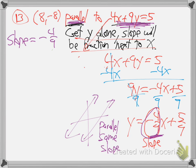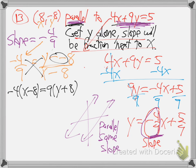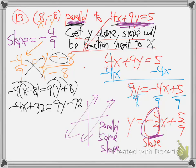So now we can solve it. We write slope equals y minus blank over x minus blank — we always end up using that. This is the x, this is the y. Put the minus 8 behind the x — double negatives there. The slope we already know. Put the minus on the top. Cross multiply diagonally: minus 4 times x minus 8 equals 9 times y plus 8 — the double negative there. Distribute: minus 4x plus 32 equals 9y plus 72. That should have been plus 72.